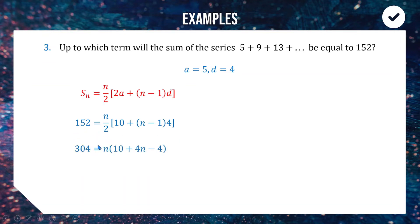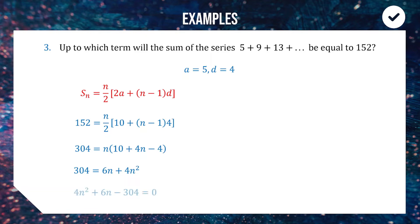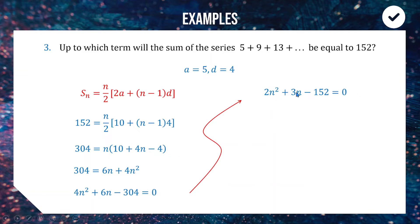We multiply the 2 across to get 304 = n(10 + 4n − 4). Expanding: 4n² + 6n. Now we have an n² term and an n term, making it a quadratic equation. Rearranging with all terms on one side: 4n² + 6n − 304 = 0. Dividing through by the common factor 2 gives 2n² + 3n − 152 = 0.